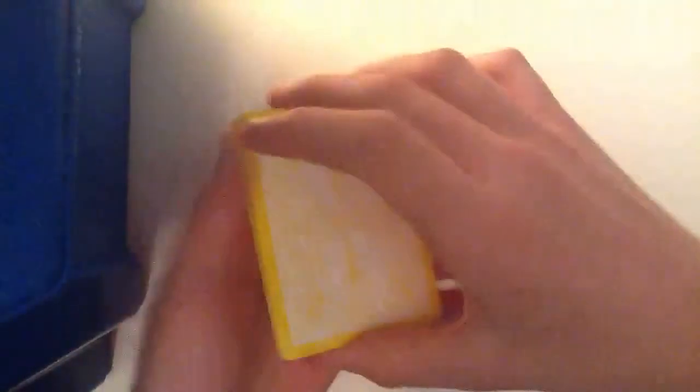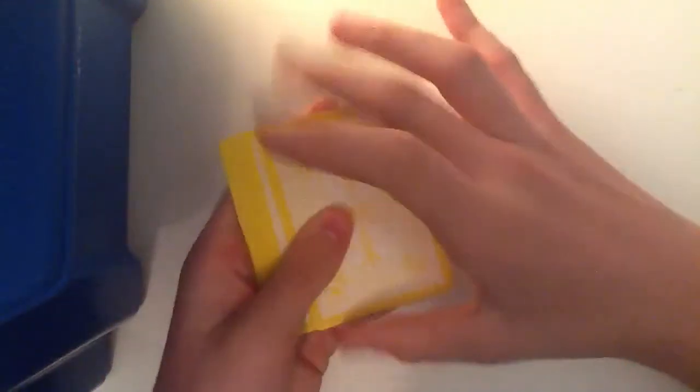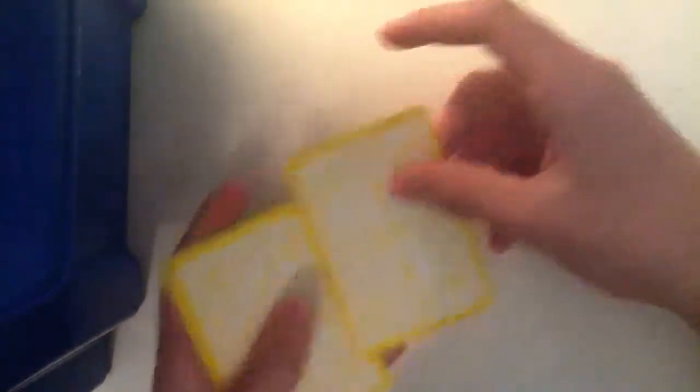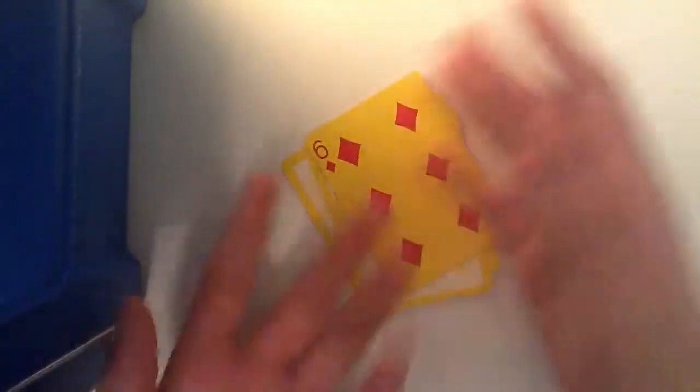Then I give this little pile to the spectator, and I say, right, go through the cards. I'm going to try to read your mind, okay? So they're going through the cards. I think, which card could it be? Okay, do it again, but a bit slower. I'm going to really try to think. Stop. That's your card. And they will be amazed.